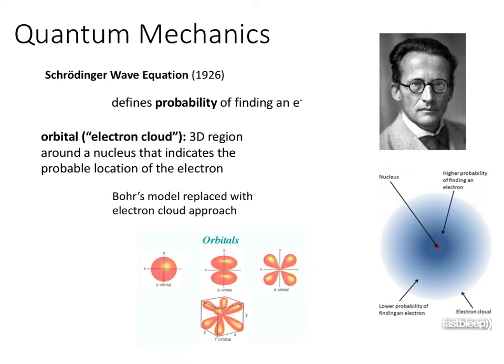Quantum mechanics brought us Schrödinger's wave equation, which is a calculus-based approach to defining the location of an electron within an atom. Its solutions have led to the orbital or electron cloud approach, where we can find our electrons.